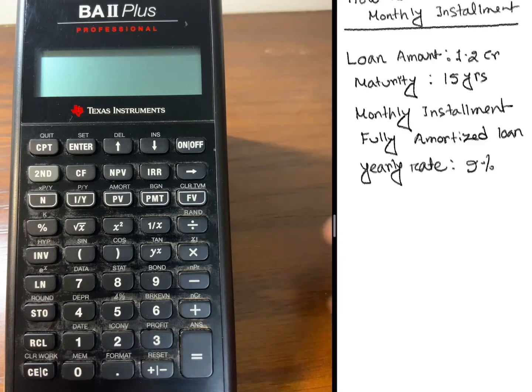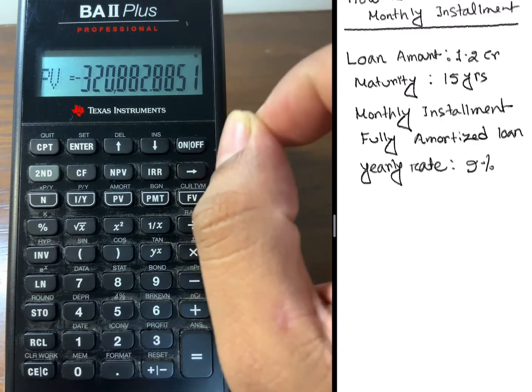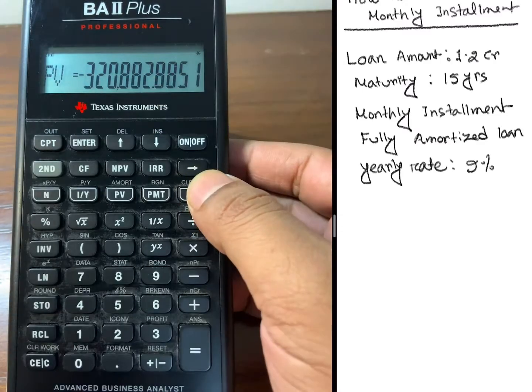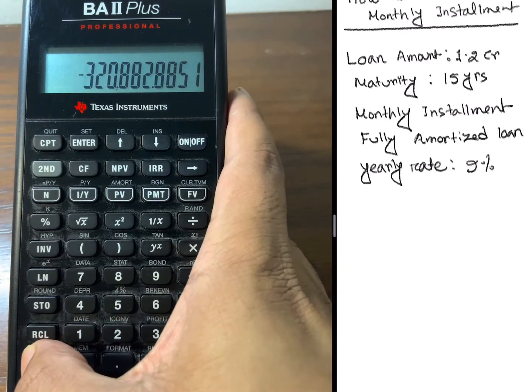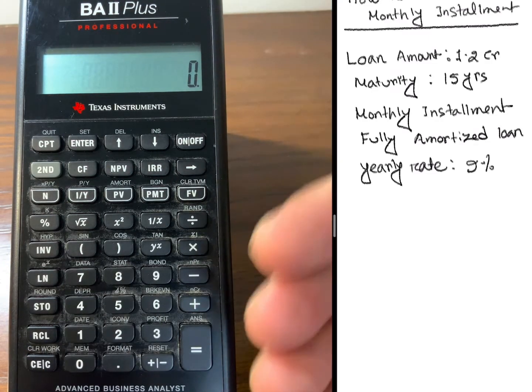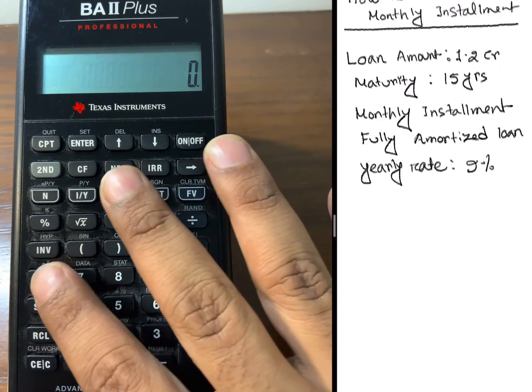Let's see. First, I need to clear the time value of money. What I will do is press 2nd, future value, and then clear. When I do that, the time value of money is clear. How can I know?